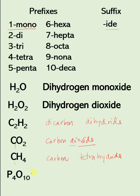Next, we have P4O10. So here we have four atoms of phosphorus — that is four, that is tetra. Then the name of the element, phosphorus. And then for the second element, we have oxygen, and we have 10 of them. So 10 will be deca. Since this is oxygen and it starts with the vowel O, we change the last part, making it decoxide. So this one is tetraphosphorous decoxide.